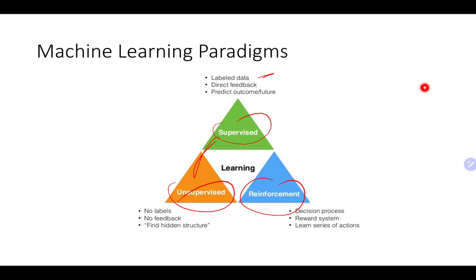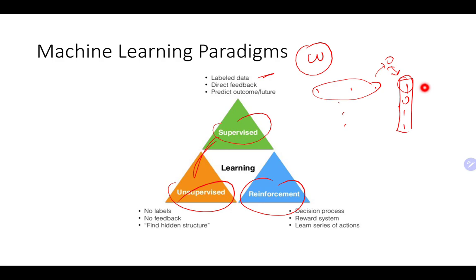In supervised learning, if data has a class label — say class 0 or class 1 — the model starts learning. Given an input it predicts class 0, but the actual label is 1, so it gets direct feedback, learns it's wrong, and updates its weights across all the data. Models learn weights, like the beta coefficients in linear or logistic regression. They have a cost function they are trying to minimize. They can do this because they know the labels — either a continuous numeric value for regression or a categorical class label for classification.